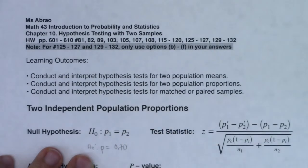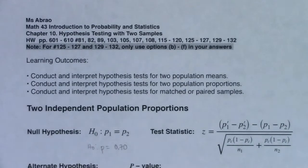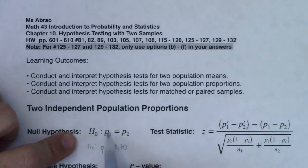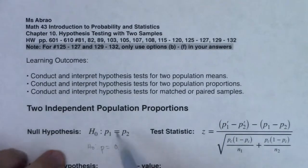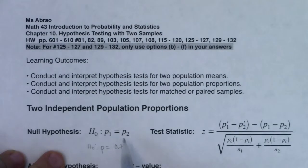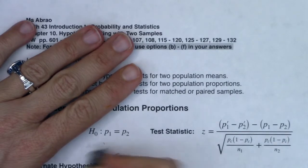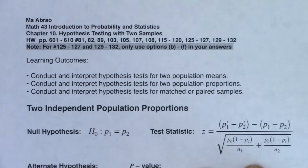In chapter nine, we had the format where P would equal some number, like 70%. Where it changes when you move from chapter nine to ten is the number goes away. We're going to just assume the two population proportions are equal to one another. There's no number in the null — we just assume equality of the two population proportions.